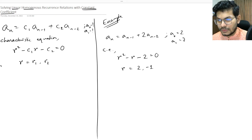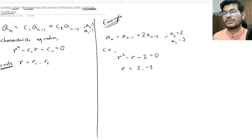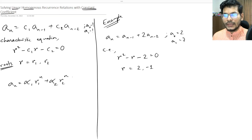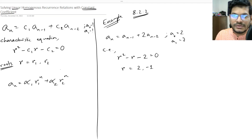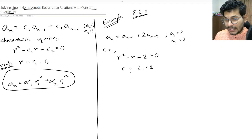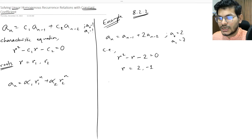Once we have the roots of the characteristic equation, the general closed-form solution is: a(n) = α₁·r₁ⁿ + α₂·r₂ⁿ. The mathematical proof for why this works is in section 8.2.2, but the key observation is that r₁ and r₂ are the roots. The constants α₁ and α₂ are determined using the base cases.